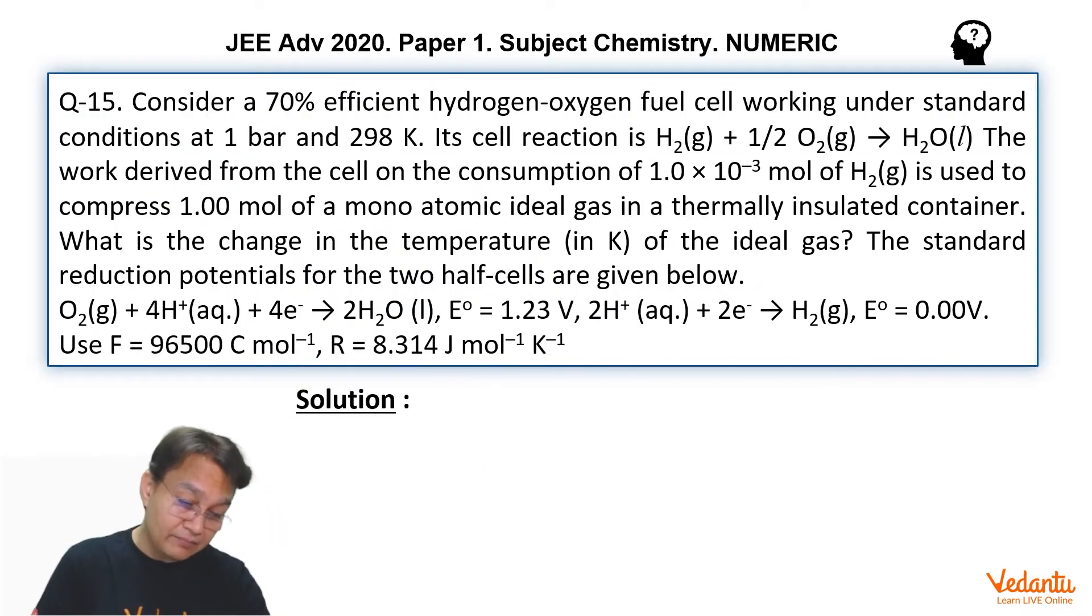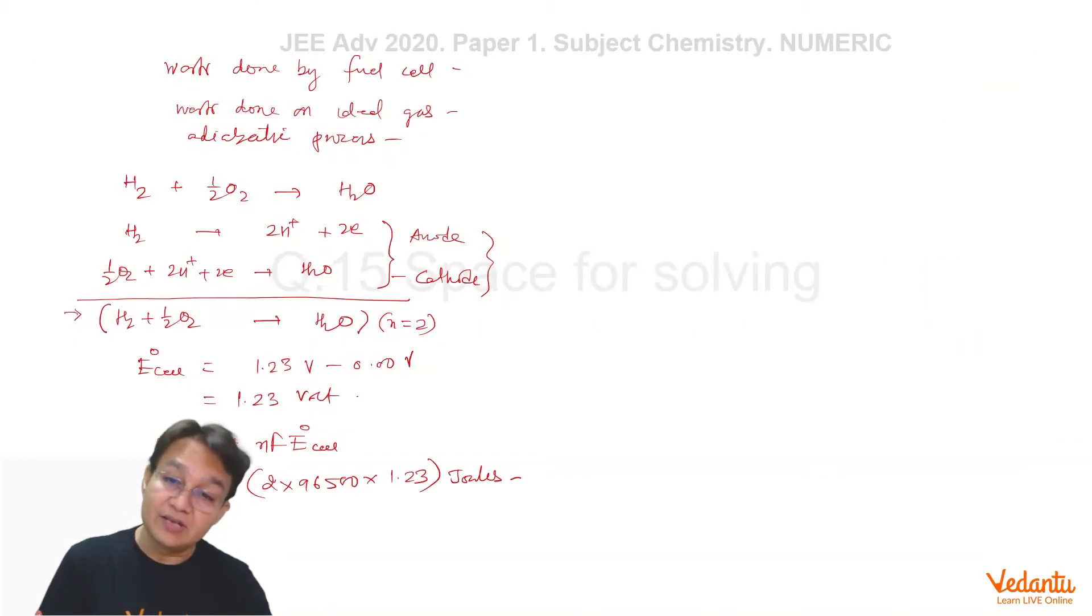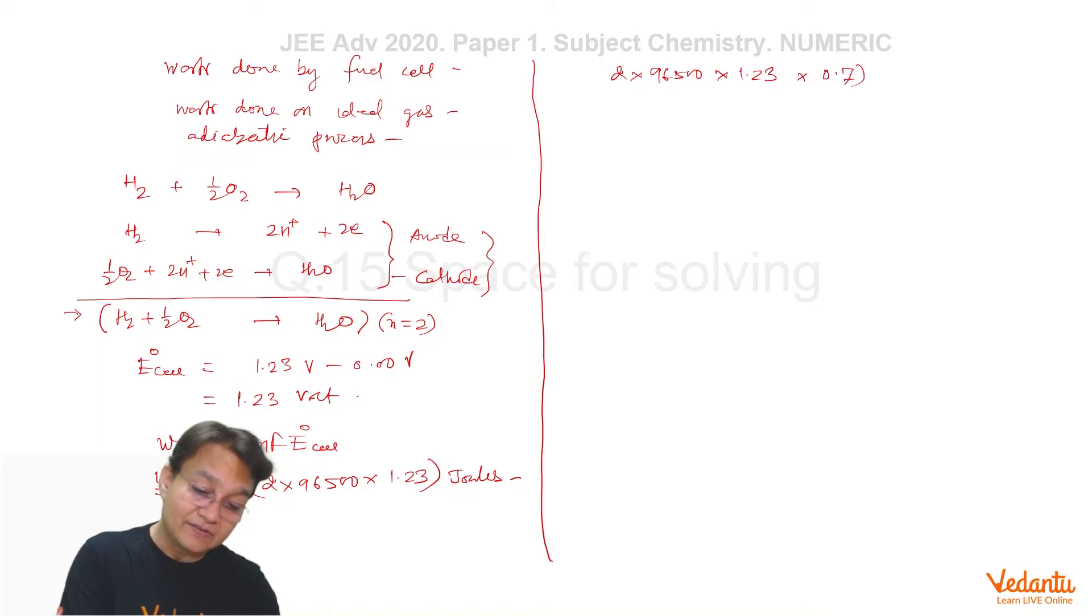But in the problem it is given that 10 to the power minus 3 mole of H2 has to be consumed. So that means we have to multiply it by a factor of 10 to the power minus 3. And only 70% of this work is going to be used as useful work. That means 2 into 96500 into 1.23 into 0.7 for 70% and into 10 to the power minus 3 joules. So this much of work will be obtained from the fuel cell.